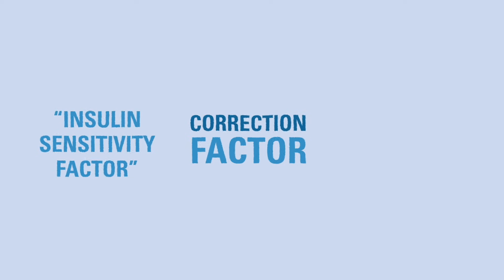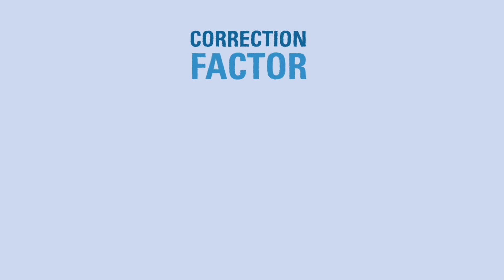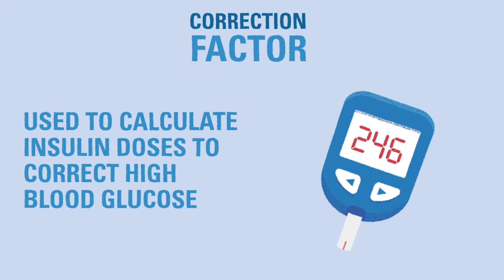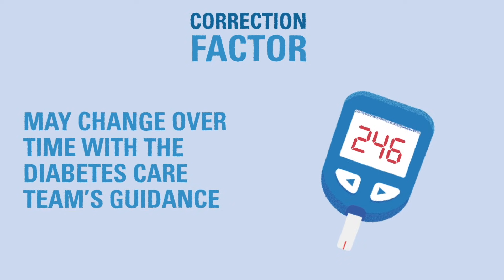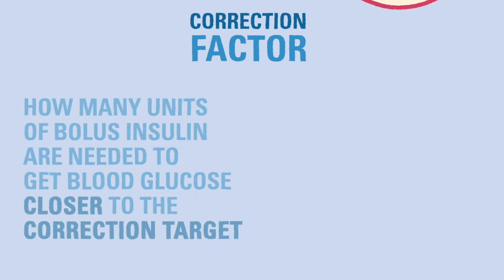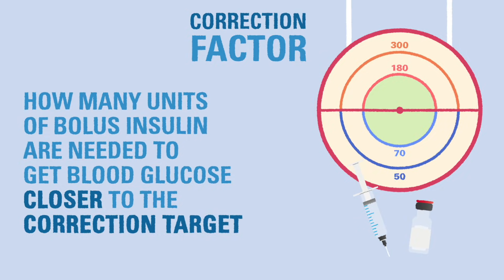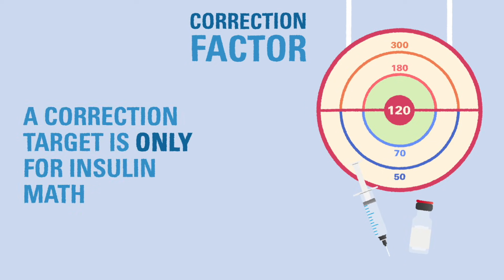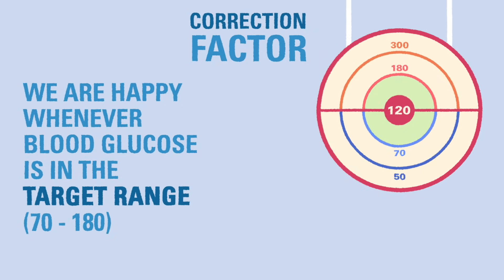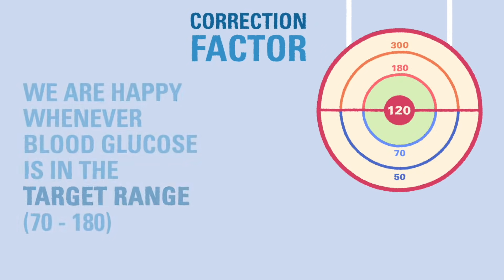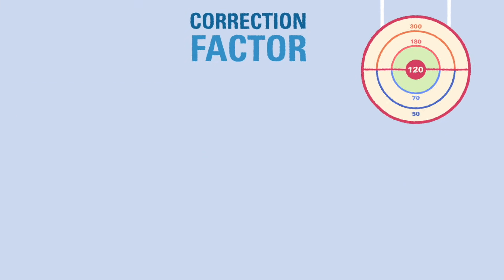The correction factor, also known as the insulin sensitivity factor or ISF, is used to calculate how much bolus insulin to give to correct a high blood glucose. An individual's correction factor may change over time. The diabetes care team can help you determine if your child's correction factor is working or if it should be changed. The correction factor tells us how many units of insulin will be required to bring your child's blood glucose closer to your correction target.